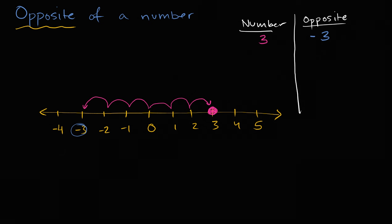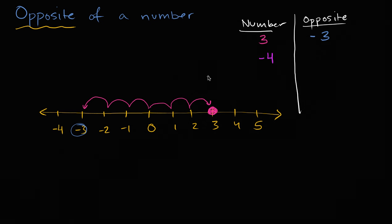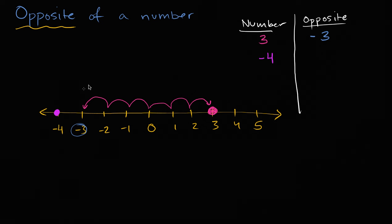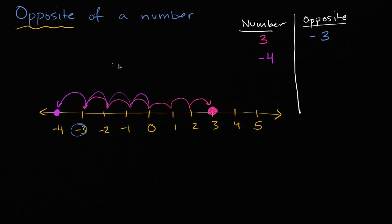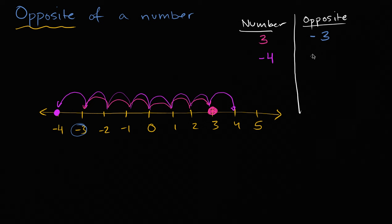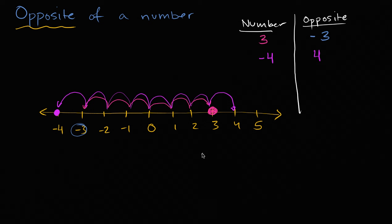Now what if your number is negative? What if your number is negative four? What's the opposite of that? I encourage you to pause the video and try to think about it on your own. Well, negative four is right over here — it is four to the left of zero: one, two, three, four to the left of zero. So its opposite is going to be four to the right of zero: one, two, three, four. It's going to be positive four. And so you're probably starting to see a pattern here.